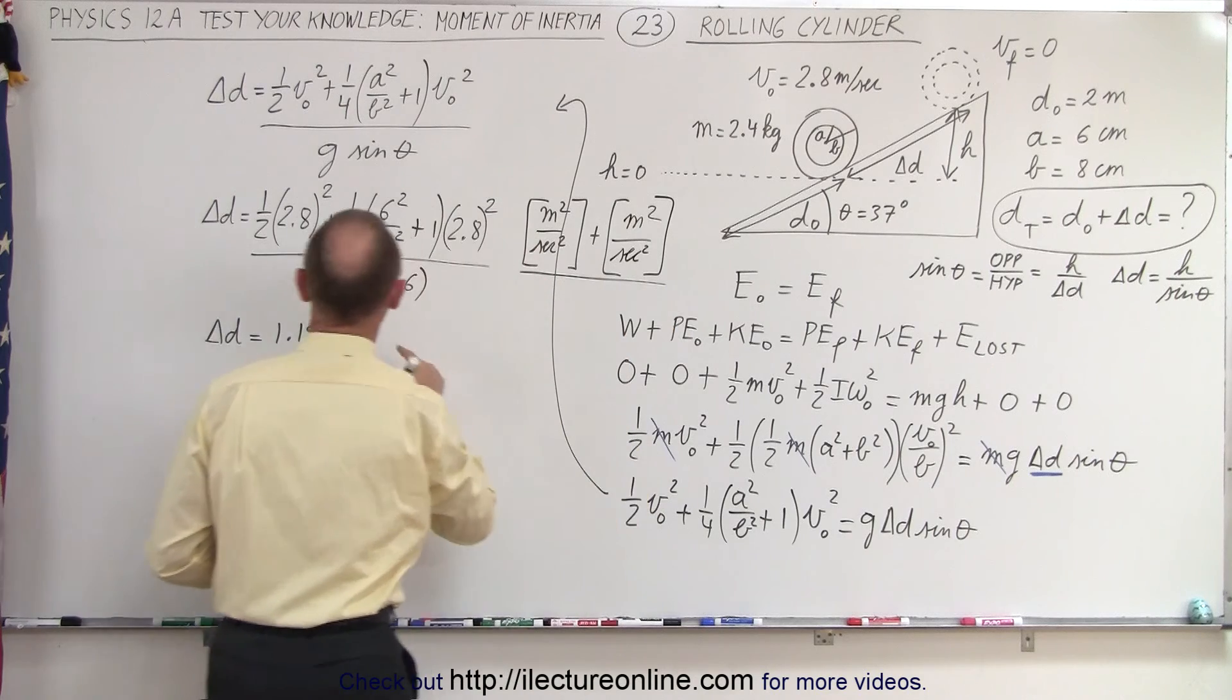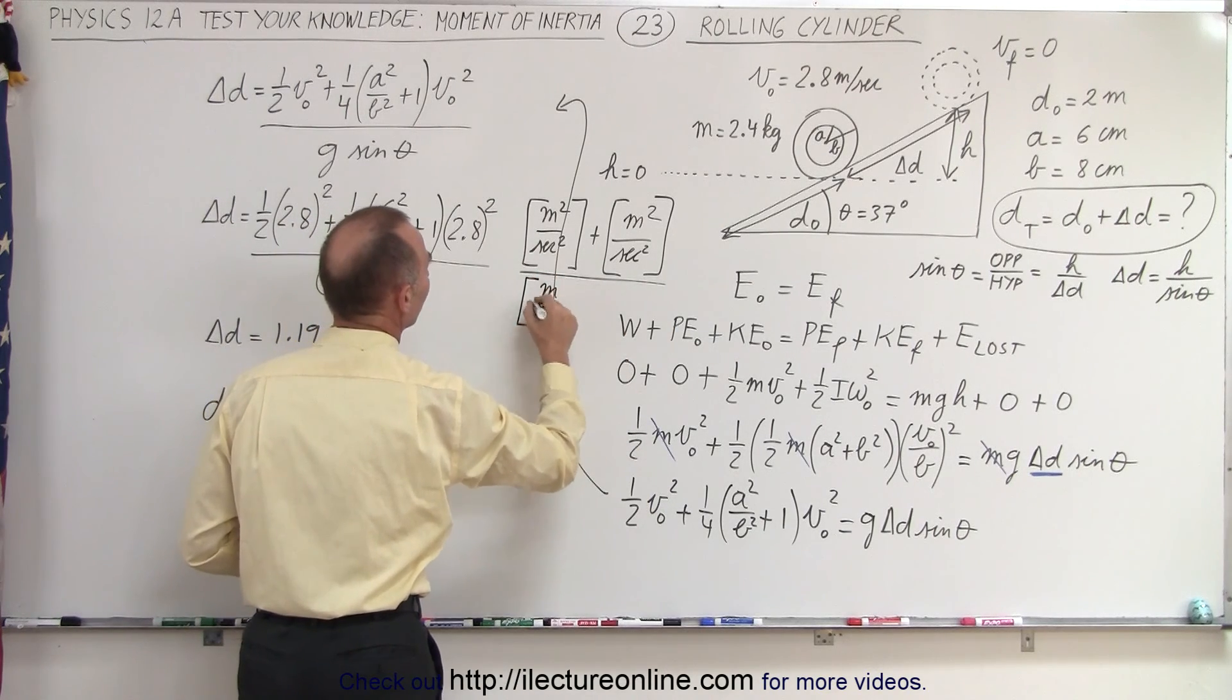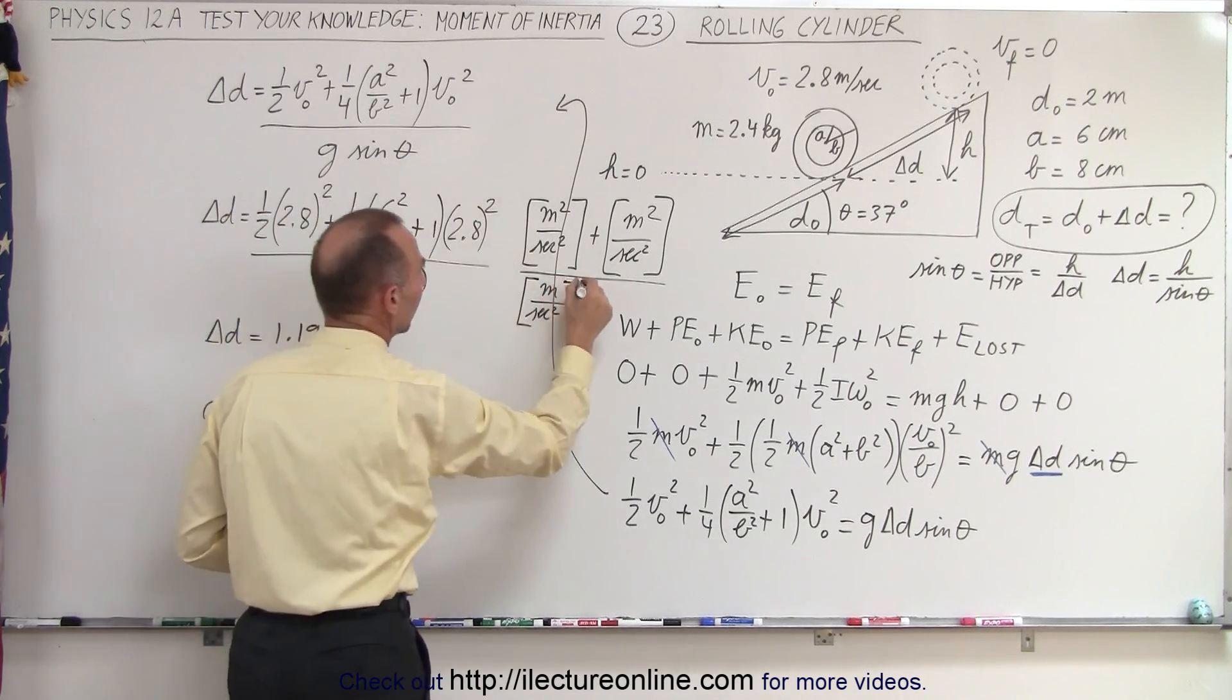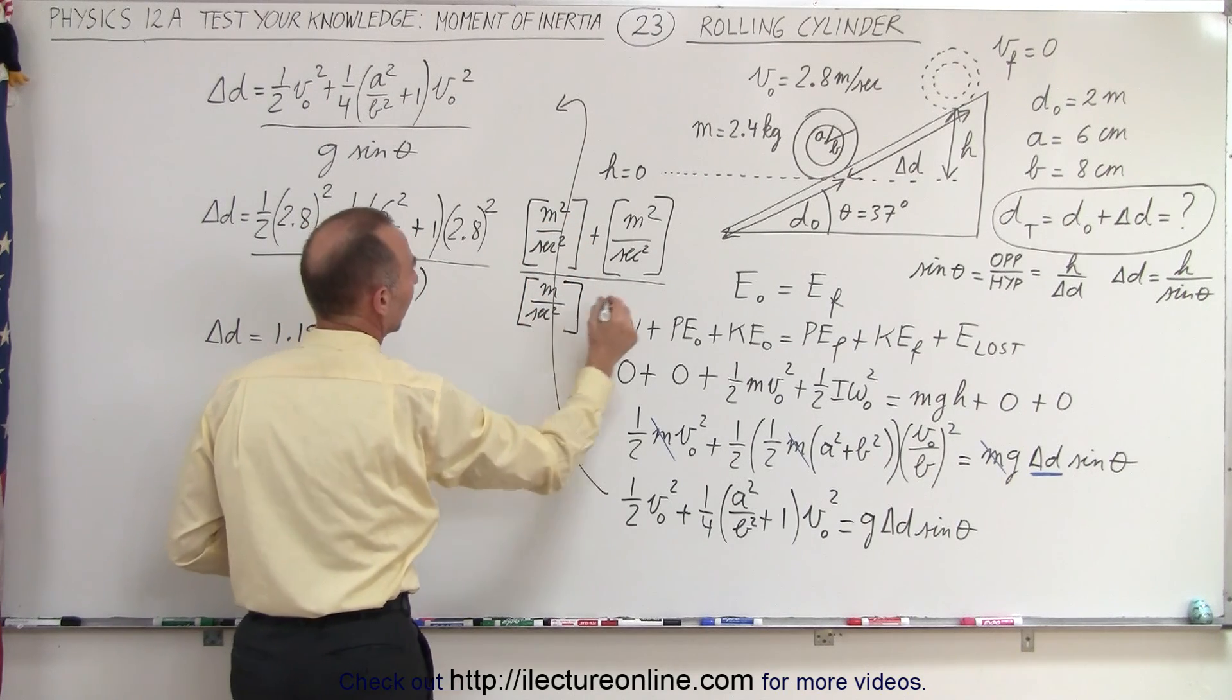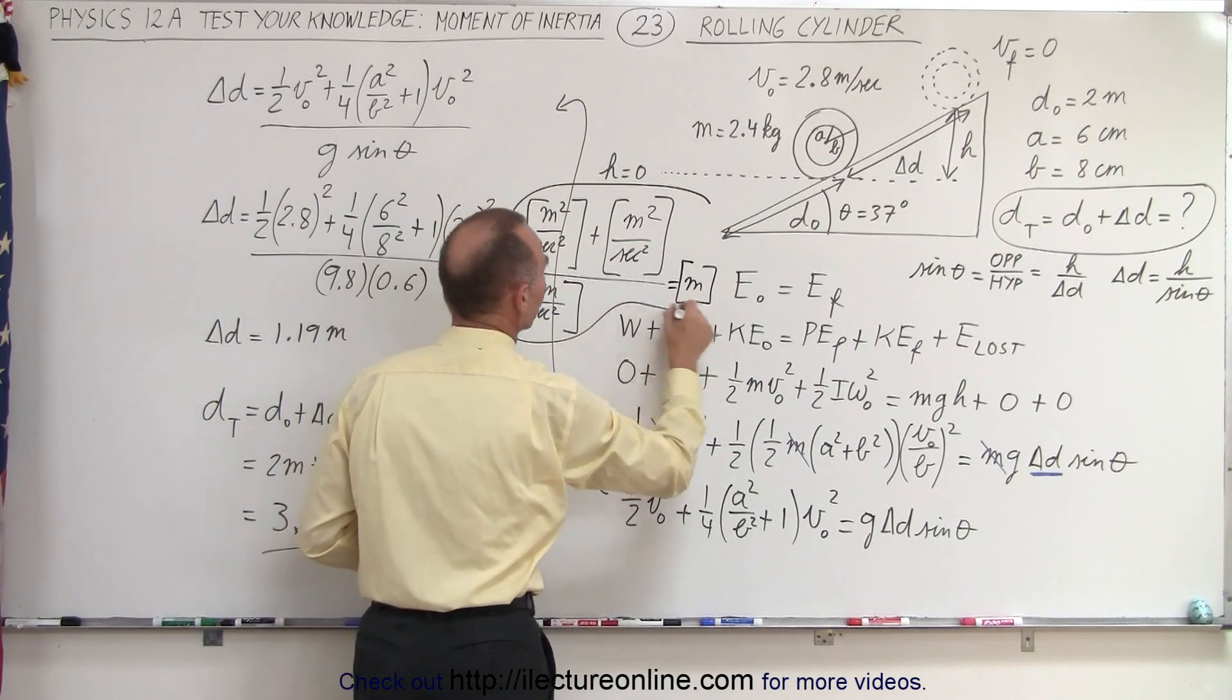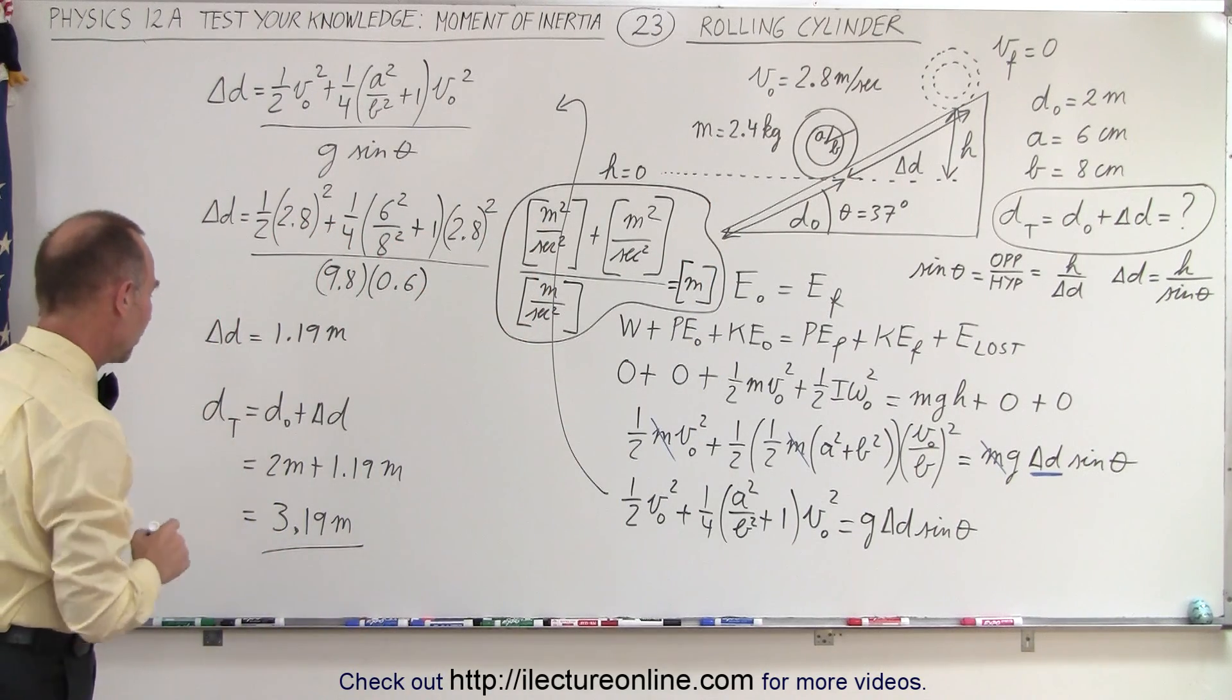And then we divide that by the denominator. We have the acceleration due to gravity, which is equal to meters divided by seconds squared. And this is unitless because we have to take the sine of an angle. So notice we have meters squared per second squared divided by meters per second. And of course, that ends up being the units of meters. So there you can see that it's always a good check to make sure your units are correct.